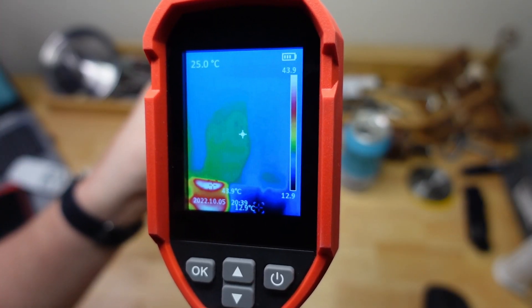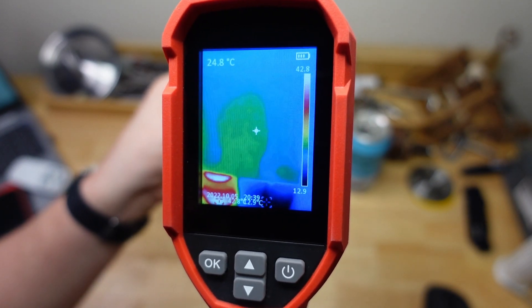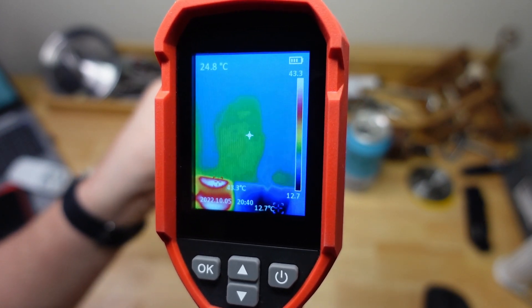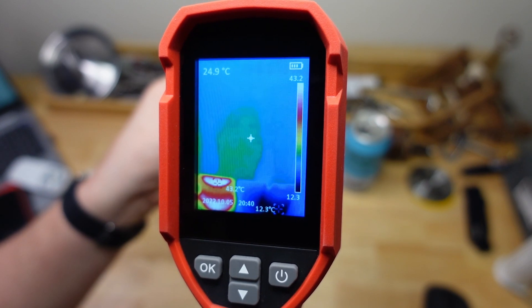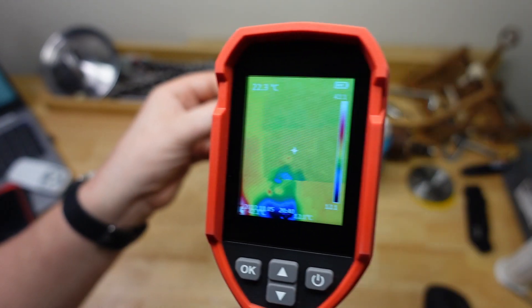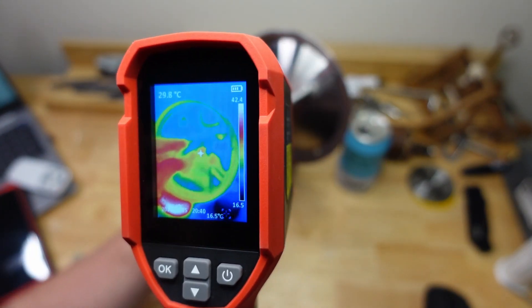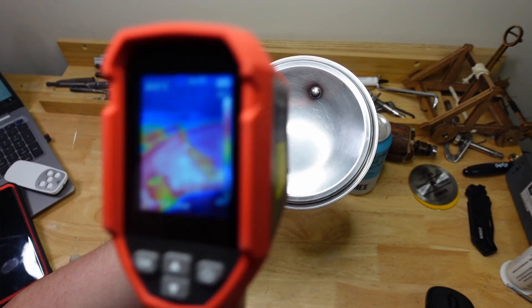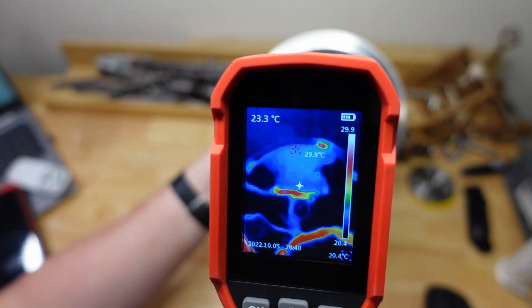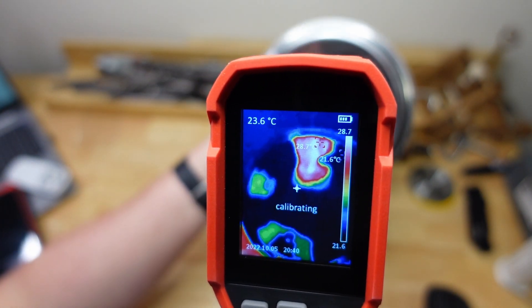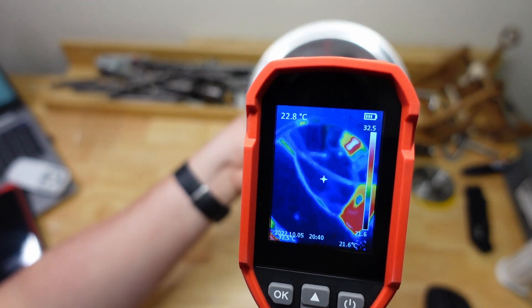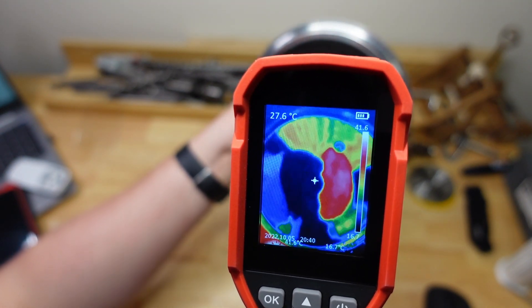And another thing you've got to watch out for is reflections. So you can actually see my reflection in the glass there. And this can be especially important when you're measuring metal. So check out this pot lid. If you want to measure the actual temperature of the metal, it helps that it's not shiny. There I am.